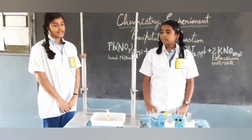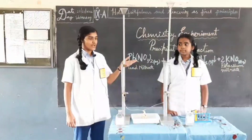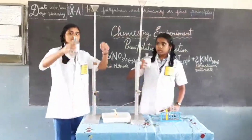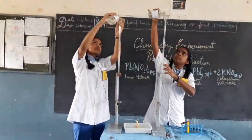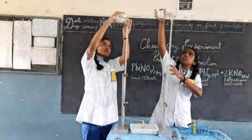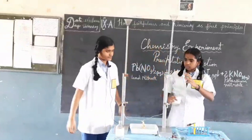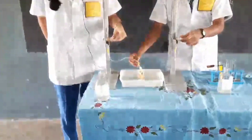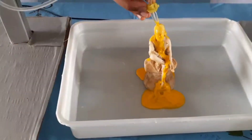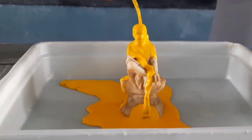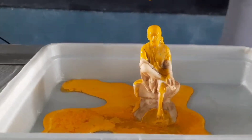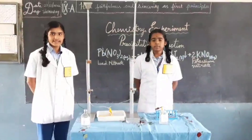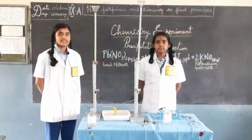Let's see the same experiment in an interesting manner. Here we have two burettes. One of them is going to be filled with lead nitrate and the other is going to be filled with potassium iodide. Both of the solutions are connected with a tube. When the solutions are allowed to mix, we get a yellow precipitate. When the aqueous solution of potassium iodide and lead nitrate are mixed together, a double displacement reaction takes place.